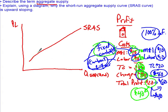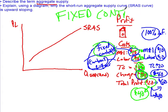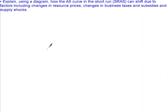In the short run it's simply that as the price level rises and there are fixed contracts — remember that, it's a lot about fixed contracts — with suppliers of labor or suppliers of materials, that's what gives the short run aggregate supply curve its upward slope.